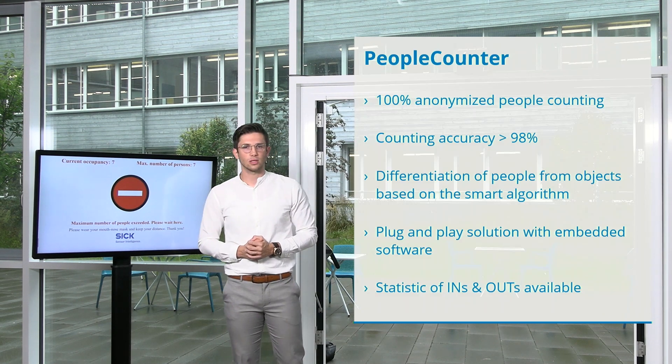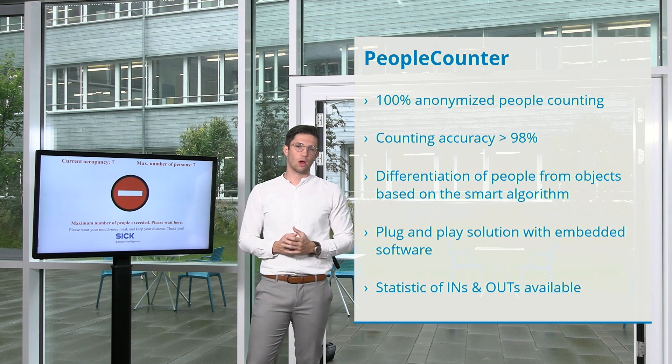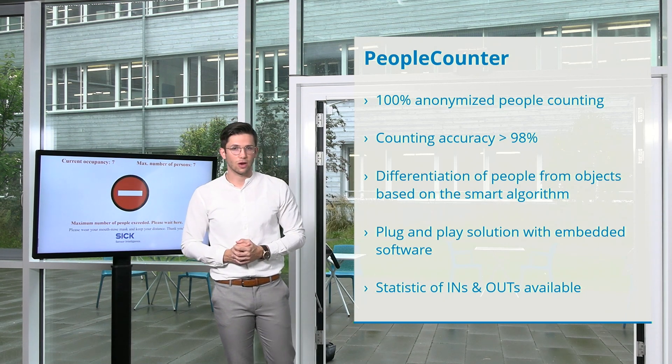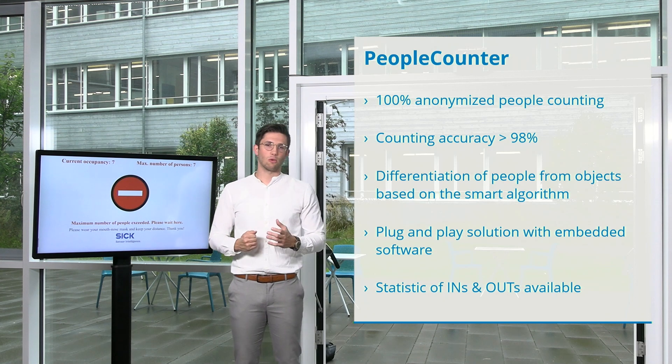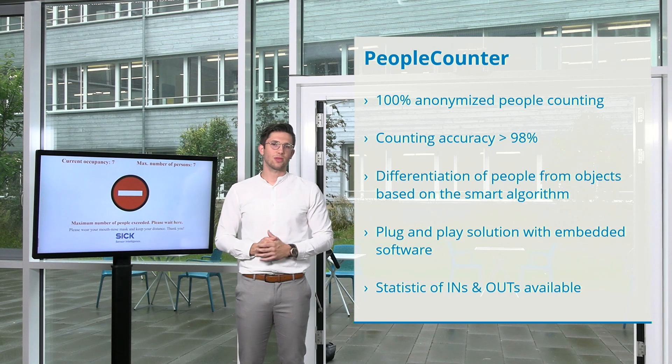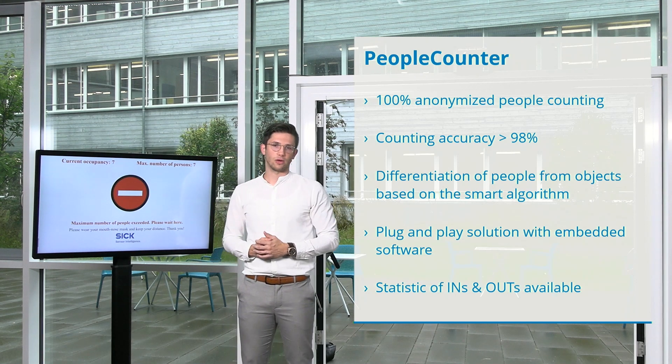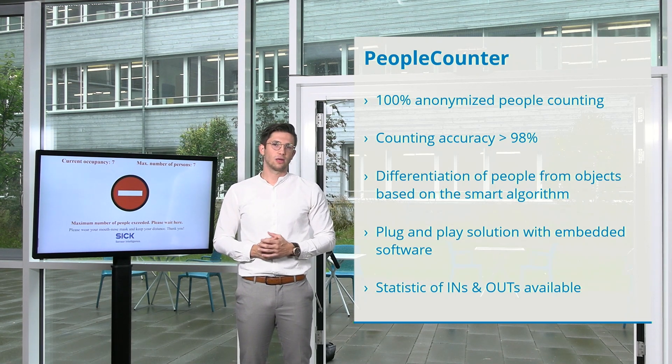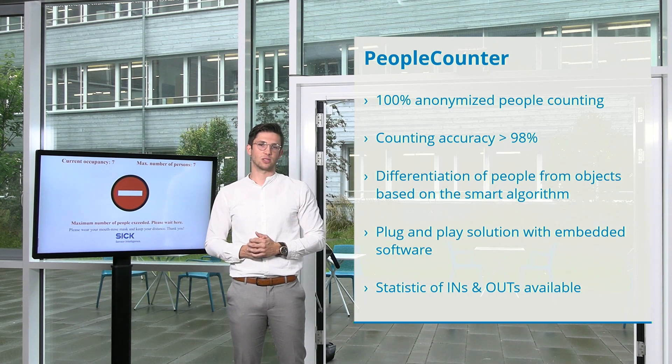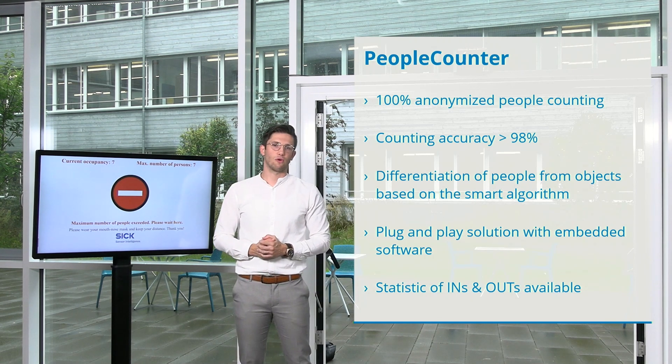Now I want to sum up all this information based on the LiDAR technology. The PeopleCounter is a 100% anonymized people counter solution with a counting accuracy of 98% by using our smart algorithm taught by more than 1000 people. We can differentiate people from objects easily to have a high counting accuracy. And with the embedded software, the people counter itself is really easy to install as a plug and play solution. And as I mentioned at the end, you have statistics available for evaluation cases.